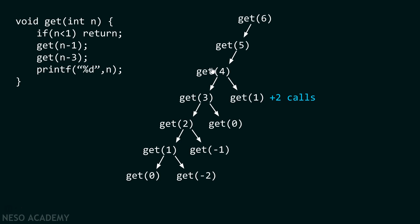After that we return back to get(4), then get(5). From get(5) we call get(2), because five minus three is two. We already know what get(2) is going to do — get(2) calls get(1), get(0), get(-2), get(-1) — a total of four calls made by get(2). Therefore, we simply note plus four calls here.